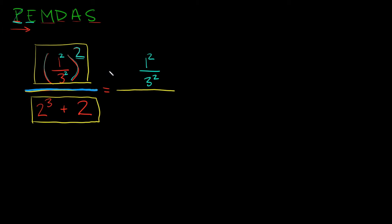So now I've simplified the top a little bit. So now let's also at the same time do the bottom one. On the bottom we have two cubed plus two. So how do we start simplifying that?